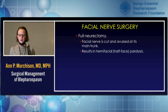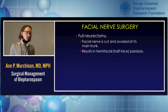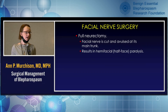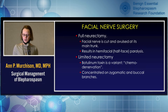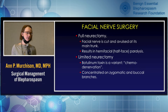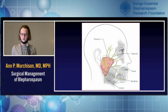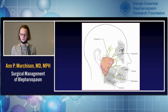There's also facial nerve surgery. A full neurectomy is very rarely done now — this would sever the facial nerve trunk, causing facial paralysis on that side. Yes, it would eliminate the signal causing the spasms, but it would result in a facial palsy. There's also limited neurectomy, which can be done with Botox, resulting in denervation of the muscle by affecting the facial nerve. Usually this would be concentrated on the zygomatic and buccal branches affecting the forceful closure.